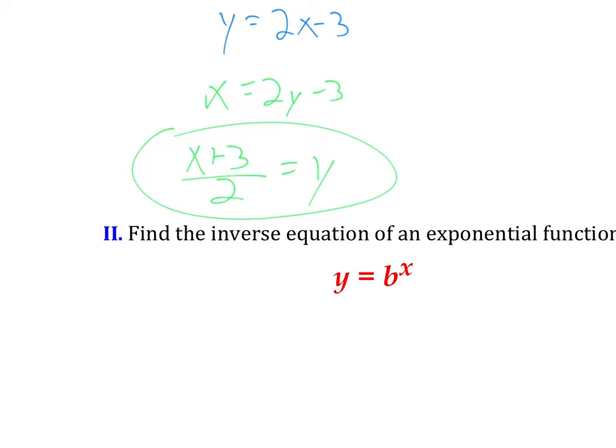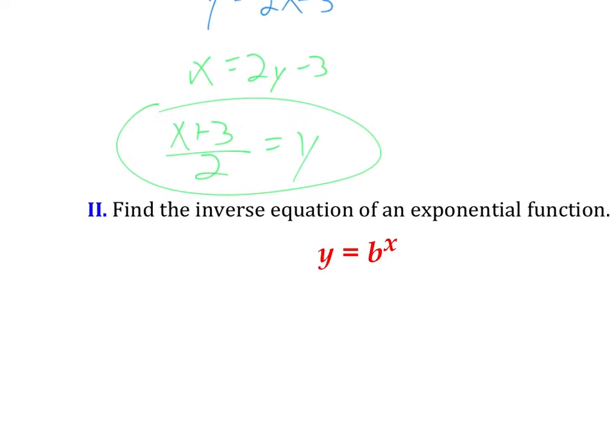If I try doing that with an exponential though, look out. If I try switching x and y to call this x equals b to the y, there's really no good way for me to get y all by itself. Like how do I get it out of the exponent there? Some people might try to argue, well you just take the yth root, right? Because then those will cancel.